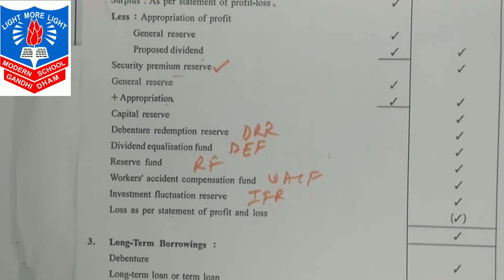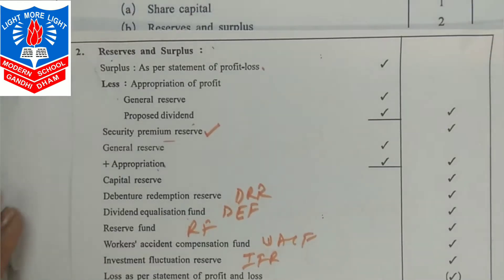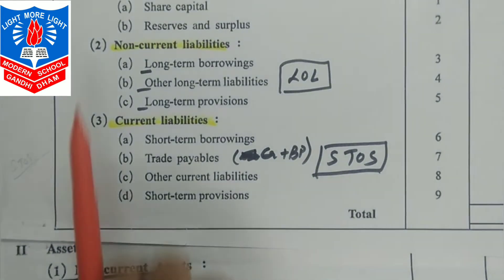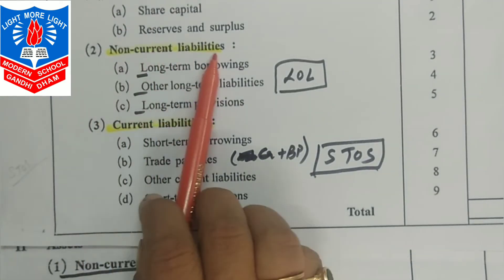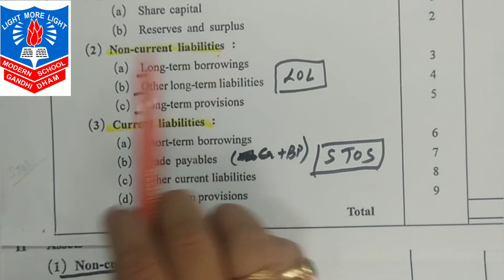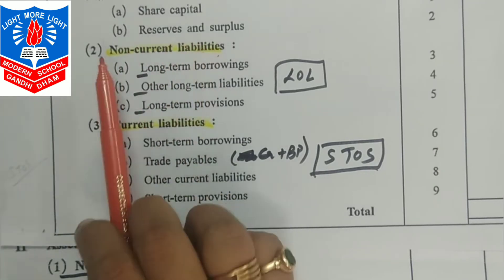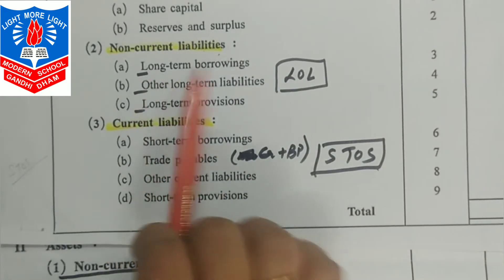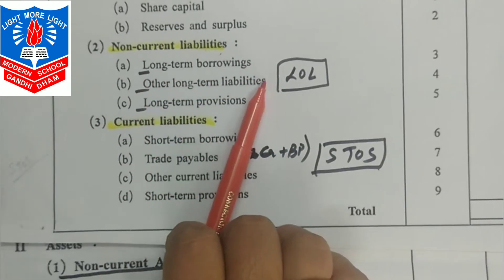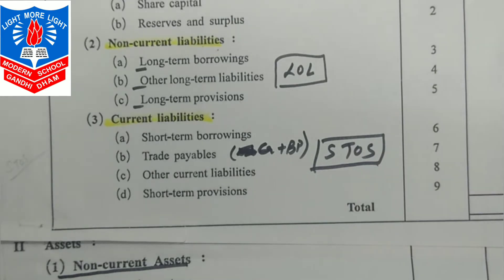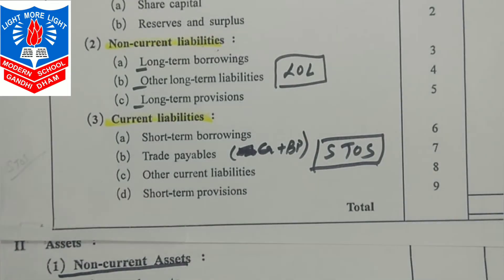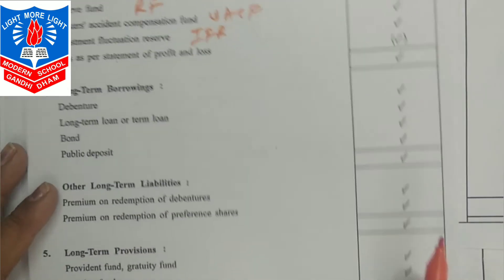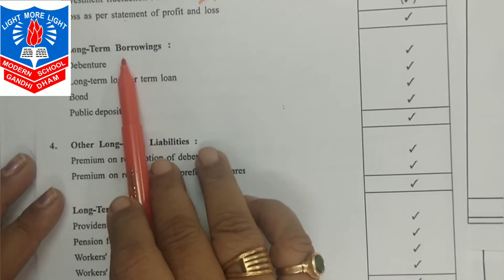That is the second sub-head of shareholders' fund. After shareholders' fund, the next main head is non-current liabilities. Under non-current liabilities, there are three items: long-term borrowings, other long-term liabilities, and long-term provisions.